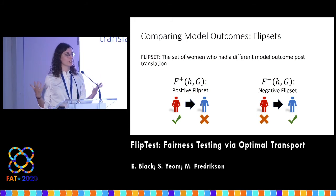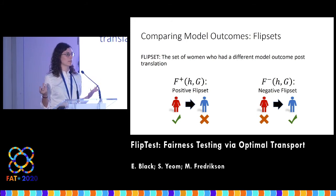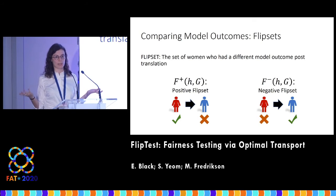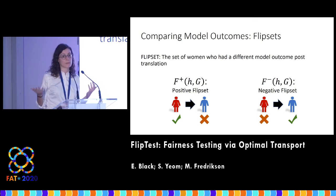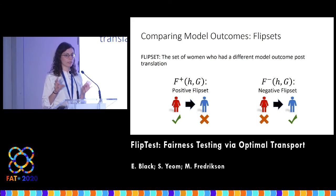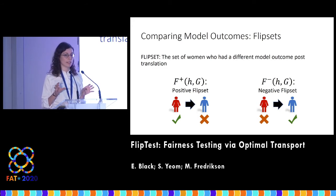This goes back to our intuitive notion of fairness from the beginning. What does it mean for a model to act unfairly? It means that it treats the male version of me differently than it treats me. So looking at these sets of people in detail is where FlipTest looks for evidence of discrimination.